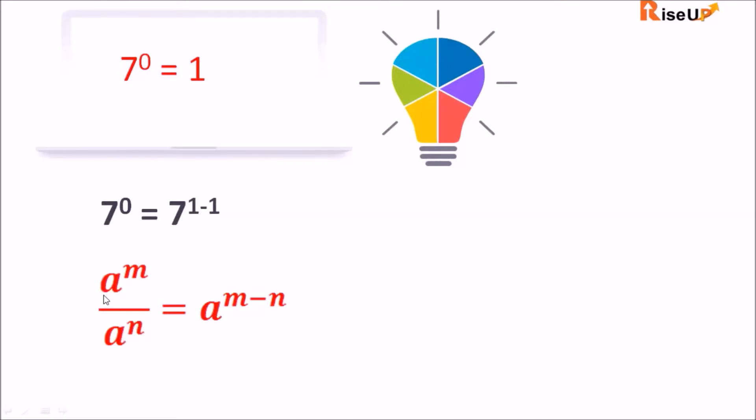Now you know the property of indices: a raised to power m upon a raised to power n equals a raised to power m minus n. So when the powers are subtracted, the vice versa.